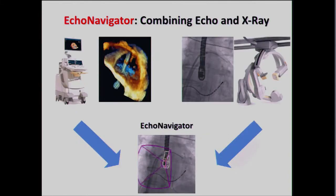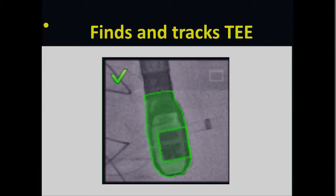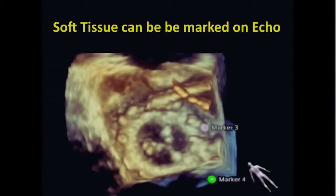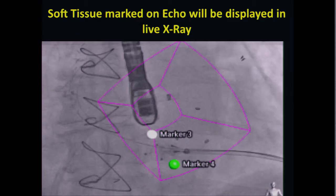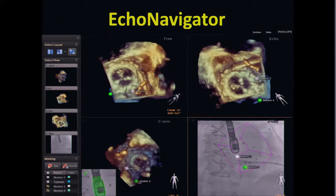Now I move on to the echo navigator, which means combining image fluoroscopy and echo. First we use transesophageal echo to detect the head of the transducer by fluoroscopy, and if we make a mark on the echo image, it automatically appears on the fluoroscopic image. When we move the camera angle, the marker automatically follows the anatomical position, making it very easy to select or find the position we want to see.